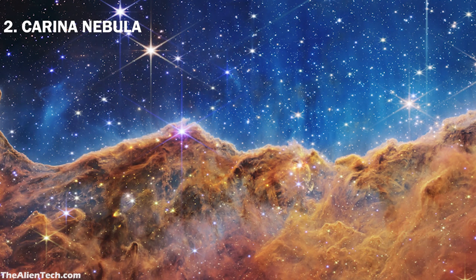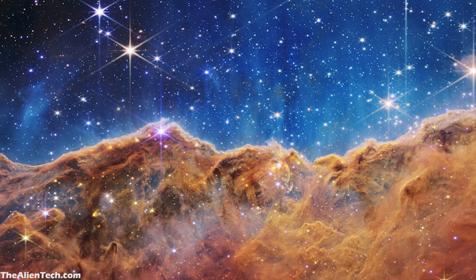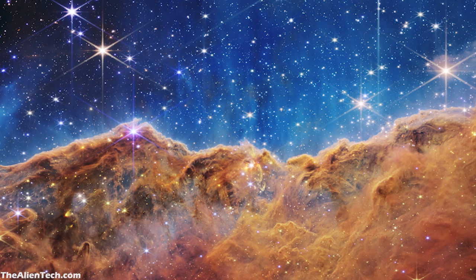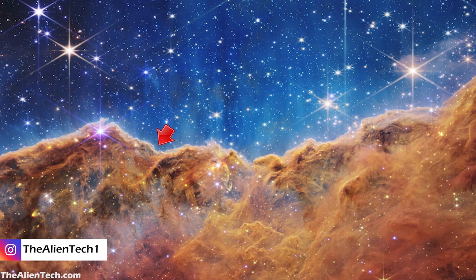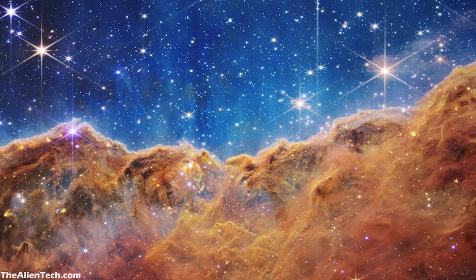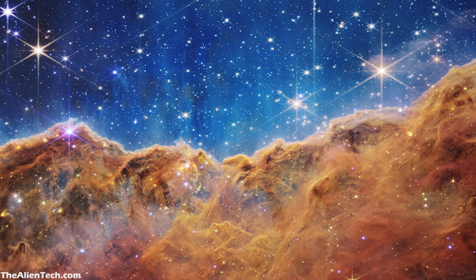The next image is of Carina Nebula. This nebula is 7,500 light-years away, and in this image you can see the top blue part with the stars and the bottom part in red-brown color. These two parts are separated by a cliff-like pattern formed by gas and dust. This cliff-like border is formed because of the intense ultraviolet radiation and stellar winds from extremely massive, hot, young stars located above the area, which are emitting high-energy radiation that causes the nebula material to slowly erode away and form this cliff-like pattern.